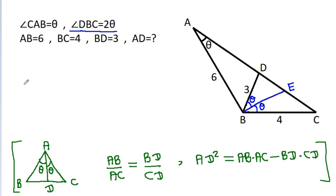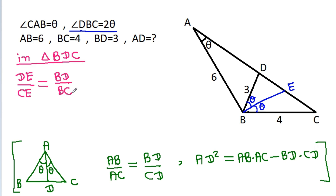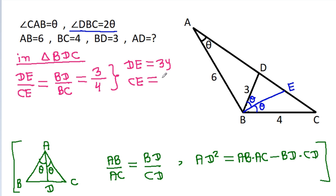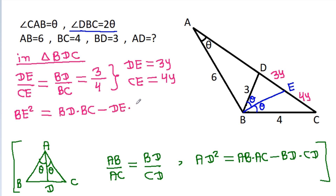So here, in triangle BDC, DE by CE will be equal to BD by BC. That means if DE is 3y, then CE will be equal to 4y. And also BE squared will be equal to BD times BC minus DE times CE.